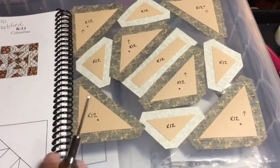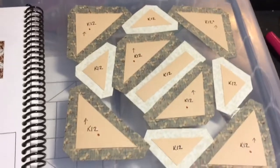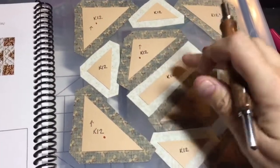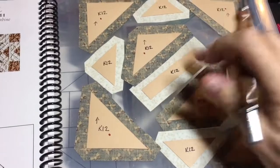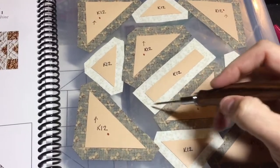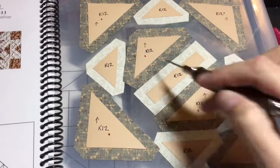So for basting on this block, what we have is we have a bunch of triangles, obviously, and one rectangle. So these I baste with the short sides first, and then the long sides. So that's no problem.